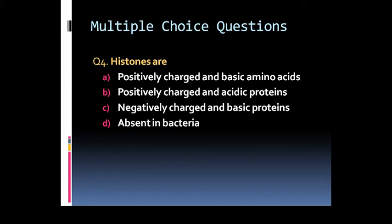Question 4: Histones are: Option A: Positively charged and basic amino acids. Option B: Positively charged and acidic amino acids. Option C: Negatively charged and basic proteins. Or Option D: Absent in bacteria.